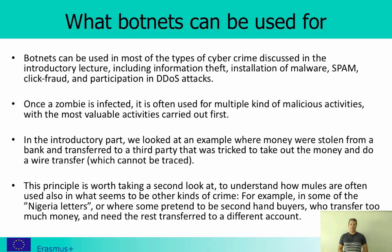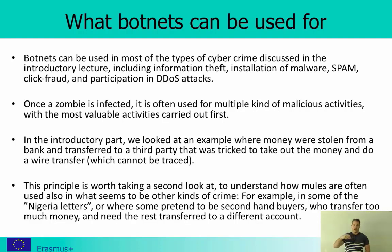Mules appear not only when you are tricking people, but also in Nigeria letters — where someone offers to send you a large amount of money, you take it out, send it on to a third party, and can keep part of it. What often happens is that the money are transferred electronically to you — a traceable transaction — then taken out in cash and given to Western Union, where they cannot be traced anymore. The electronic traces stop at you, and the money come from different kinds of crime.